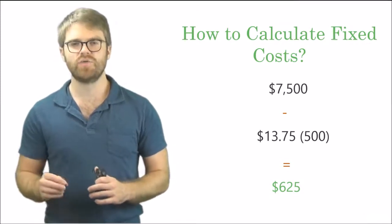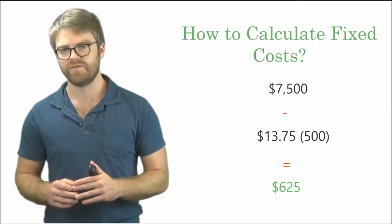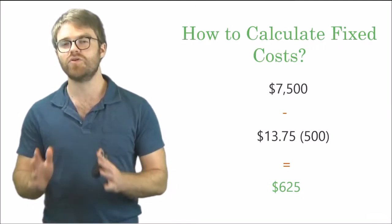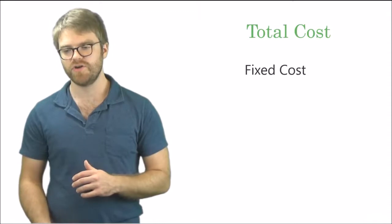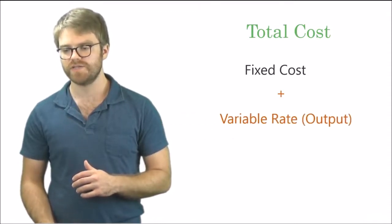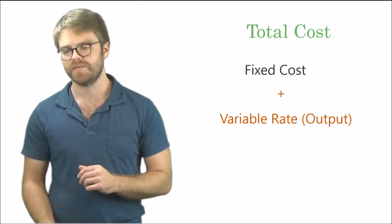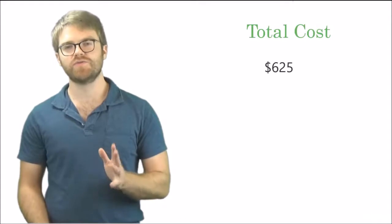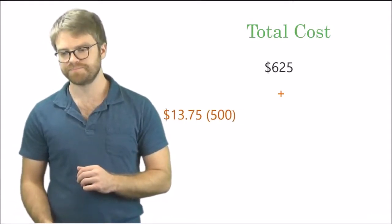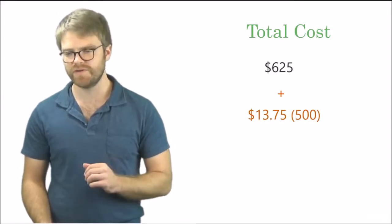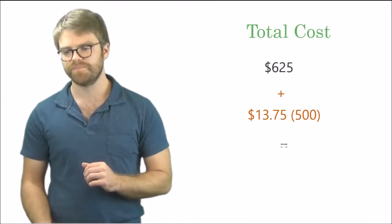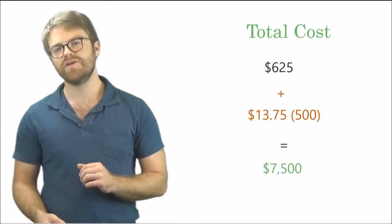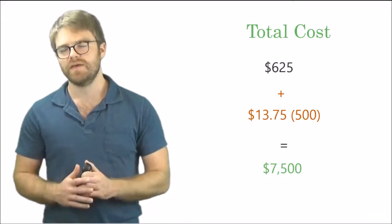Your fixed costs are $625 and your variable rate is $13.75. Now plug these into the total cost formula: fixed costs plus variable rate times output equals total costs. Plugging in: $625 plus $13.75 times 500 equals $7,500. So that's your total cost confirmed.